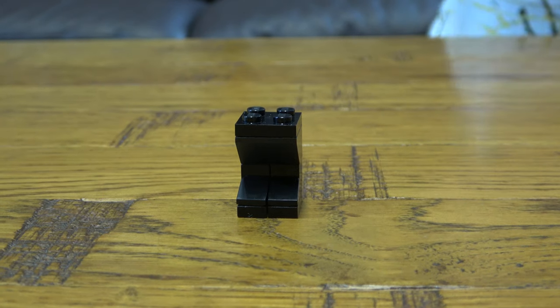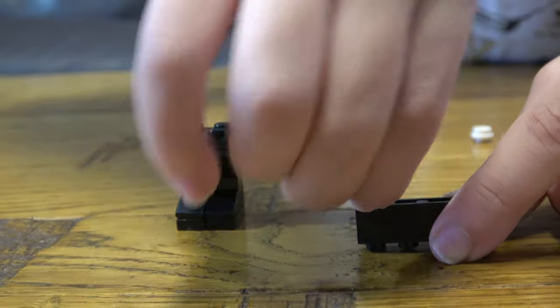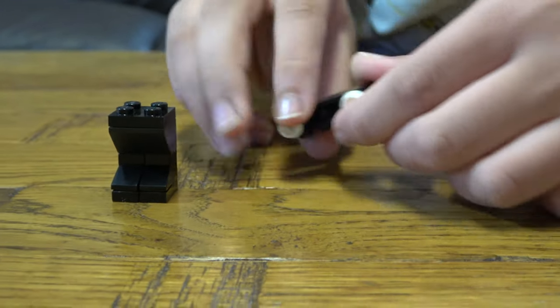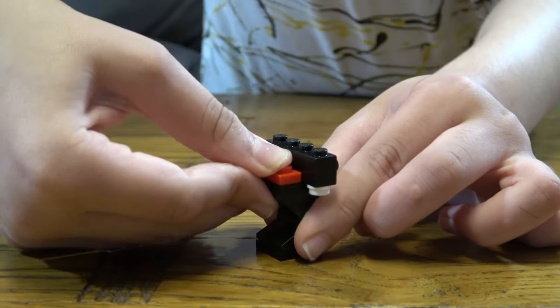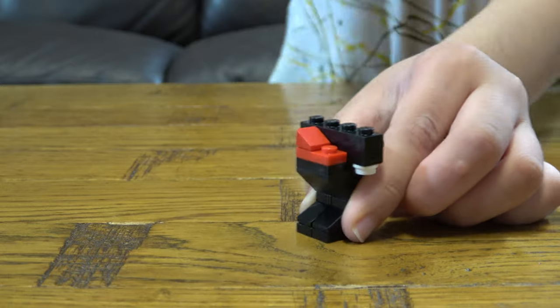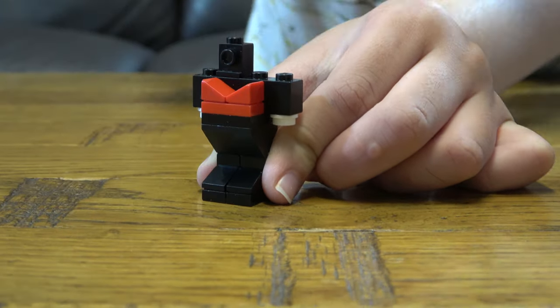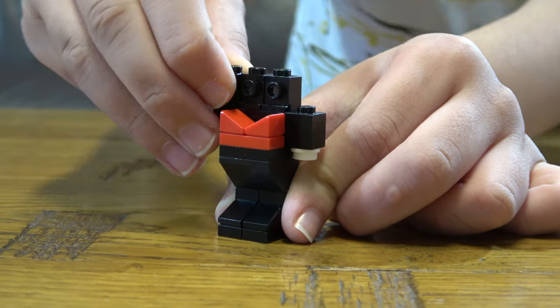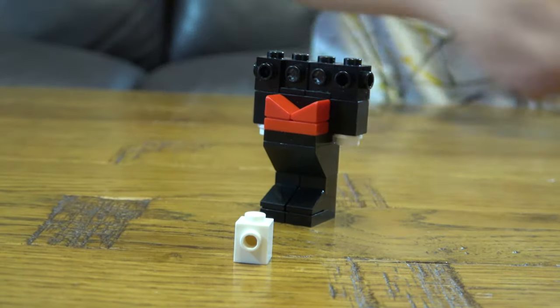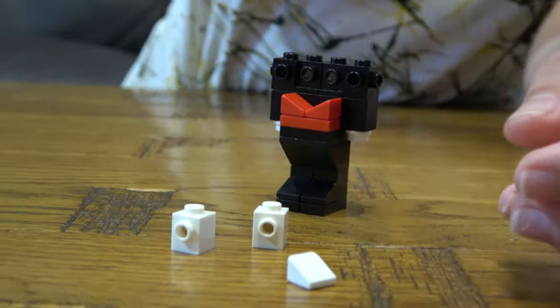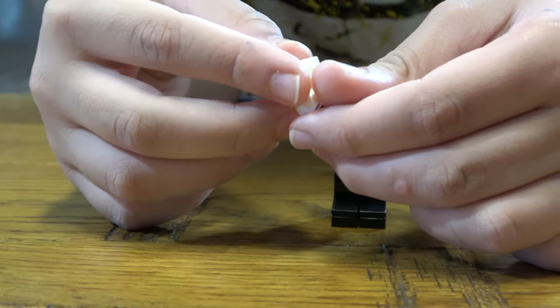Next, we get one of these, we place it here like so, and place it here like this. And get this, and place this here, this here like so. And next we get these two here, these here, these here. Then next get two of these, and place this one like so, and then this one like this.